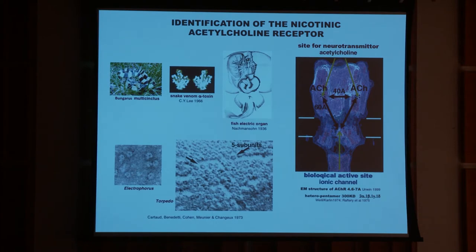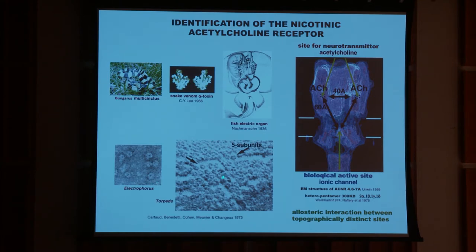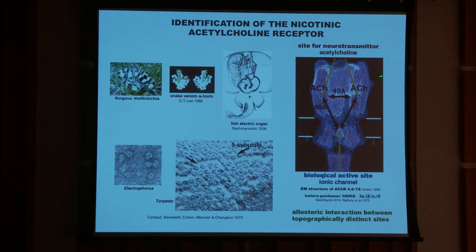This is a scheme about the isolation of the first of these receptors for neurotransmitters, the acetylcholine receptor, using fish electric organs and snake venom toxins. Here is the first image of this very important molecule by electron microscopy, with five subunits. And if you look closely at a higher resolution scale, you have here the shape of the molecule, which is a transmembrane molecule. Here it recognizes the neurotransmitter, and here the ion channel.